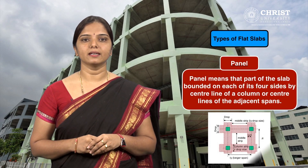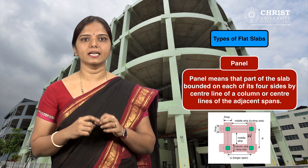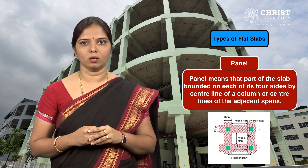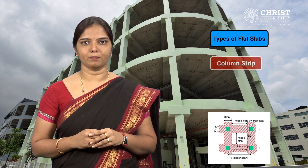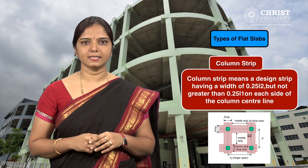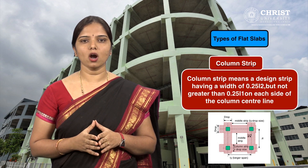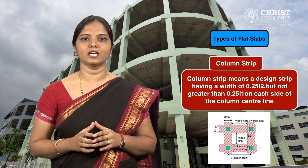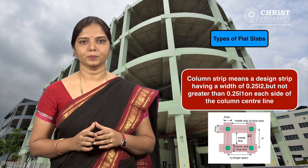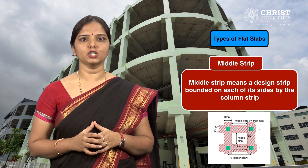Panel means that part of the slab bounded on each of its four sides by the center line of a column or center lines of the adjacent spans. Column strip means a design strip having a width of 0.25 L2 but not greater than 0.25 L1 on each side of the column center line. Middle strip means a design strip bounded on each of its four sides by the column strip.